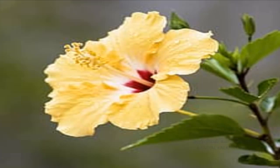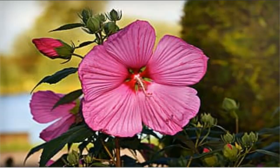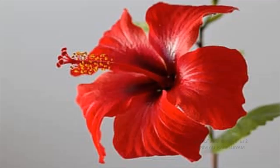Petals are the largest part of flowers. They are often attractive, brightly colored, sometimes sweet-scented, and attract the insects. This ring of petals together is called corolla.